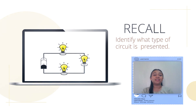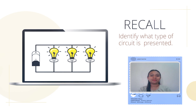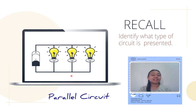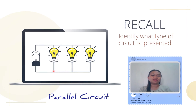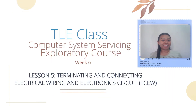How about the next one? Yes, this is a parallel circuit. In a parallel circuit, the lamps are connected across the wires so that if one lamp fails, the others will not be affected. Congratulations — now we're moving forward to Lesson 5: Terminating and Connecting Electrical Wiring and Electronics Circuit.